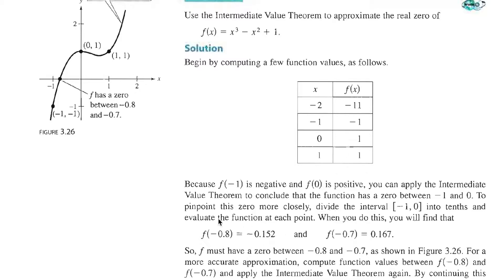They find that -0.8 is a negative value, but -0.7 gives a very slightly positive value. So somewhere in there we're in there.